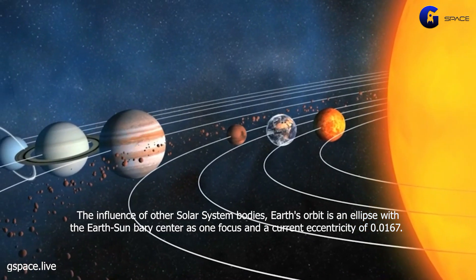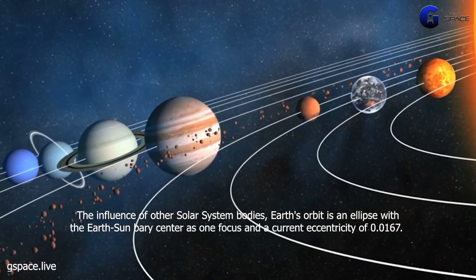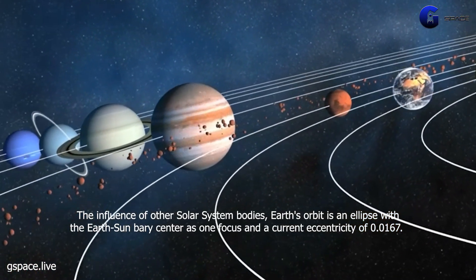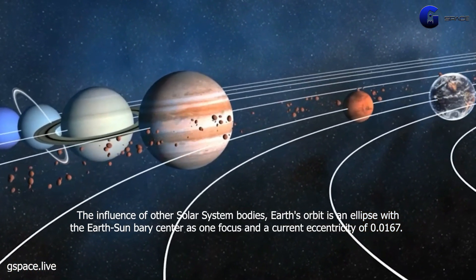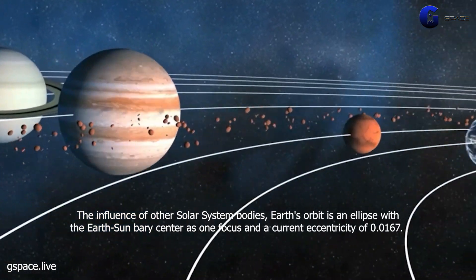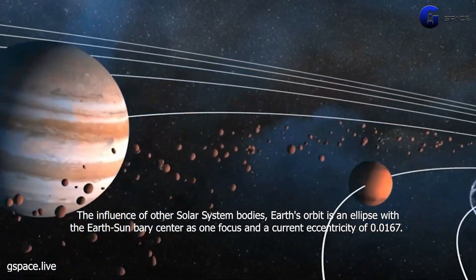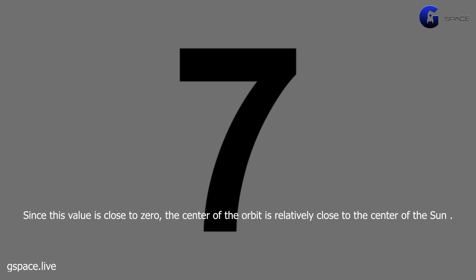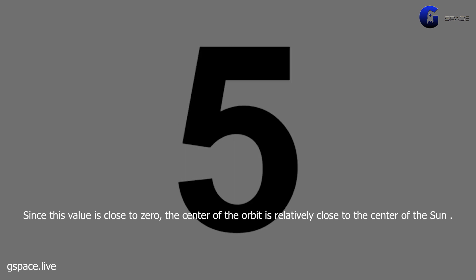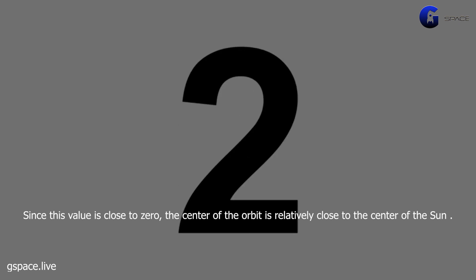The influence of other solar system bodies: Earth's orbit is an ellipse with the Earth-Sun barycenter as one focus and a current eccentricity of 0.0167. Since this value is close to zero, the center of the orbit is relatively close to the center of the Sun.